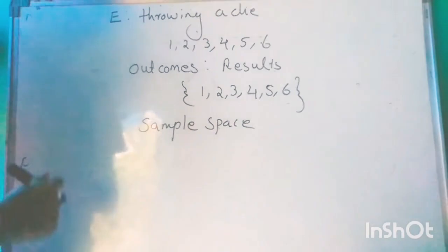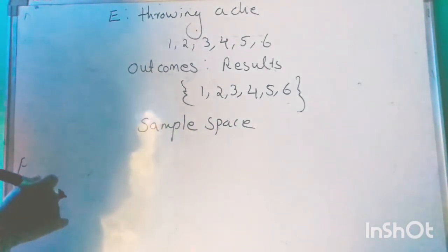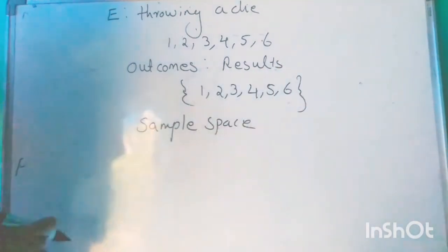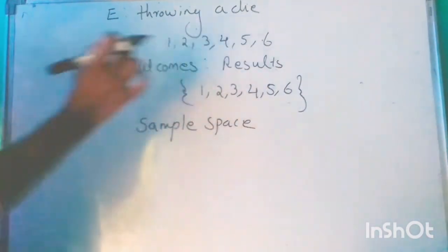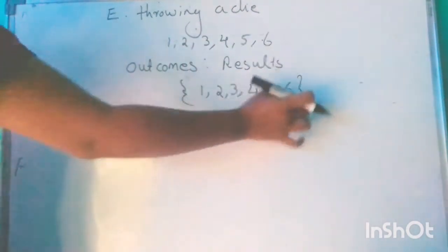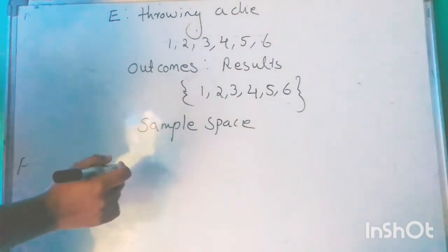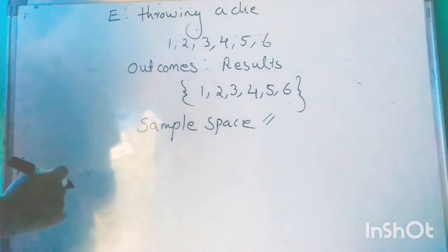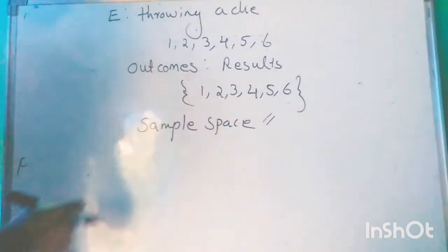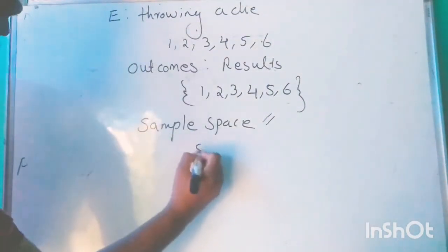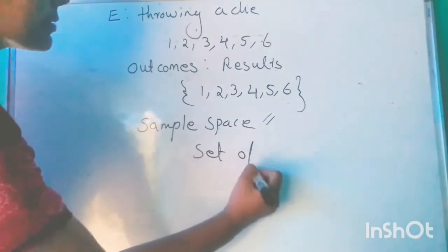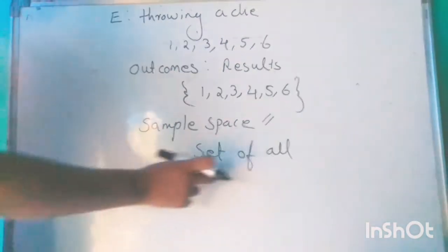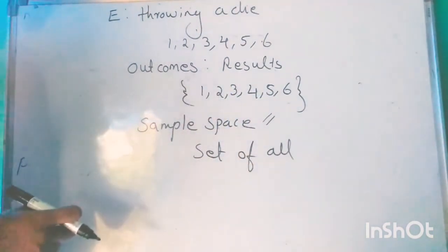The sample space of an experiment is the set of all possible outcomes. The set of all possible outcomes of an experiment is called the sample space.